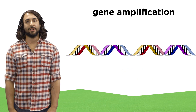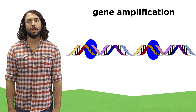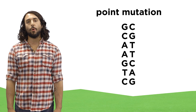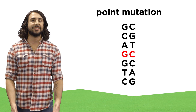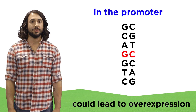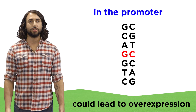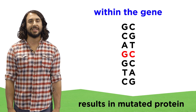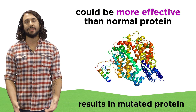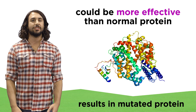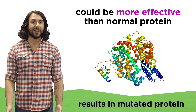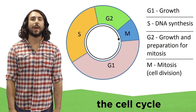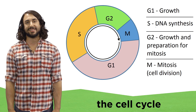The gene might be amplified, resulting in many copies of the gene, which also results in excessive amounts of that protein. Or there could be a point mutation — a change in a single base pair — either in the promoter for the gene, which could again lead to overexpression, or within the gene itself, which may result in a mutated form of the protein that has enhanced activity or is more resistant to degradation and thus operates more effectively than normal. Any of these mutations may lead to abnormal stimulation of the cell cycle.